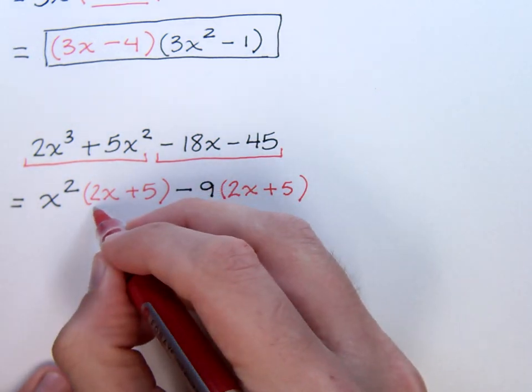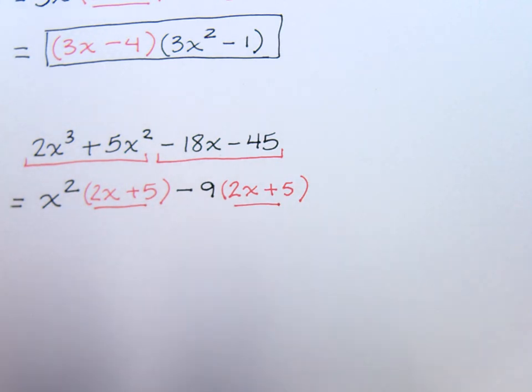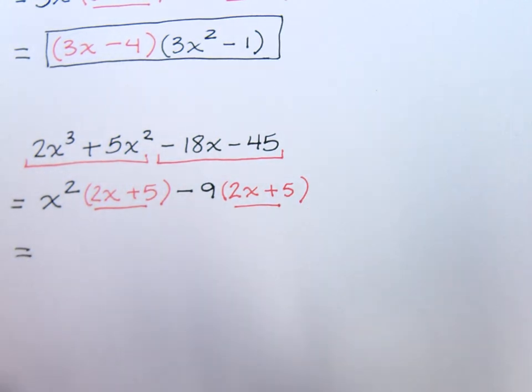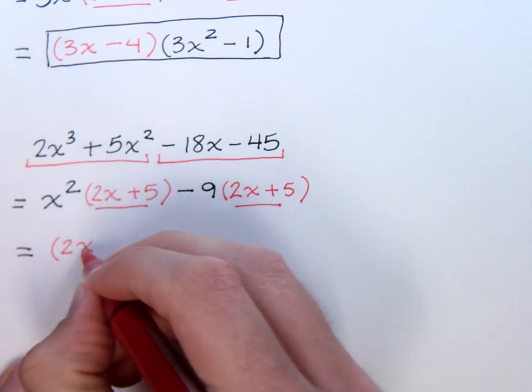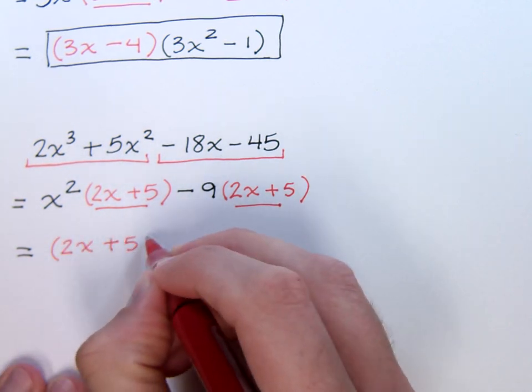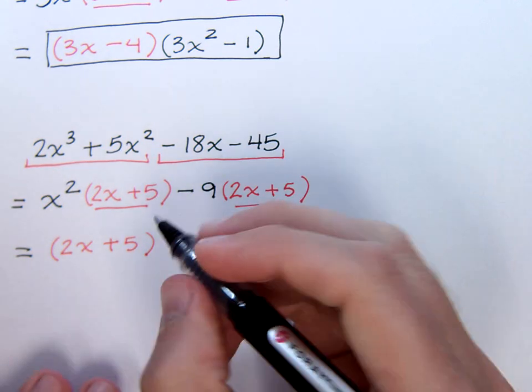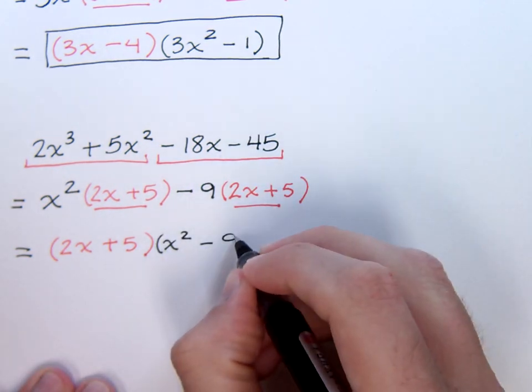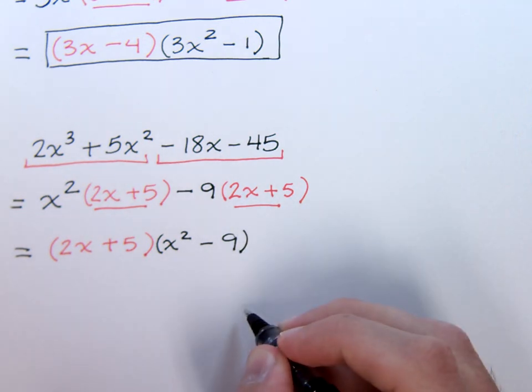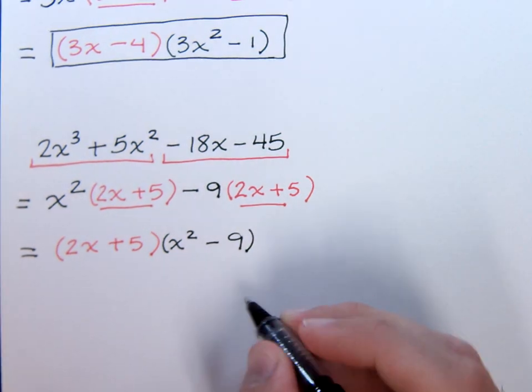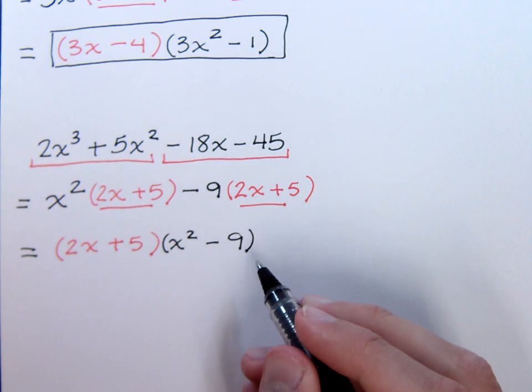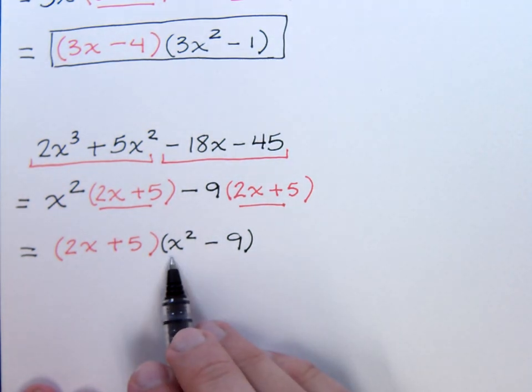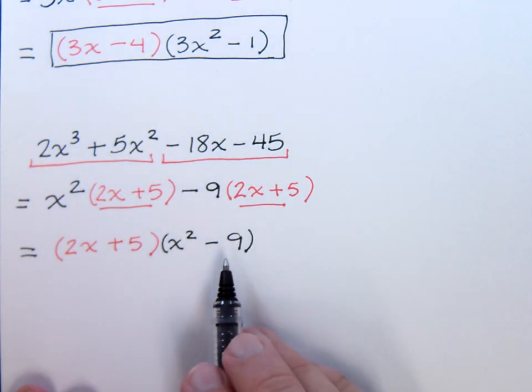And then we just finish like we've been doing with these factoring by grouping problems. Two x plus five is the big common factor that comes out in front. So, here's my two x plus five. And then the stuff that I'm left with is x squared minus nine. Now, at this point in the game, we would just leave it like this. However, in 0310 and later on in 0308, we know that we can do more with this x squared minus nine. So, that's what we're going to work on right now.